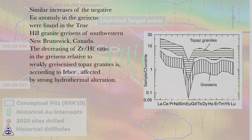Similar increases of the negative Eu anomaly in the greisens were found in the True Hill granite greisens of southwestern New Brunswick, Canada. The decreasing of Zr-Hf ratio in the greisens relative to weakly greisenized topaz granites is, according to Erber, affected by strong hydrothermal alteration.